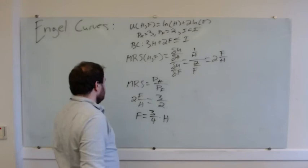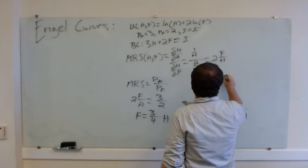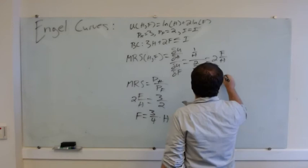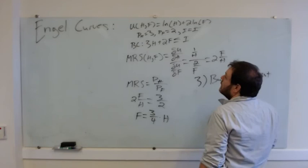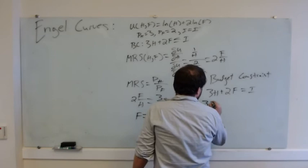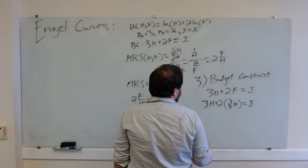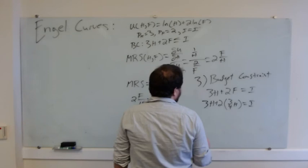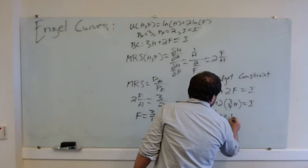What do we do with this? We plug it into our budget constraint. So we'll say 3h plus 2f equals i. We plug in 3 fourths h for f and say 3h plus 2 times 3 fourths h equals i. That's going to be 3h plus 3 halves h, so that's going to be 9 halves h equals i, h is going to equal 2 ninths times i.